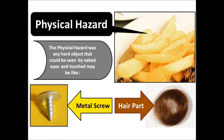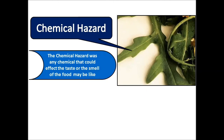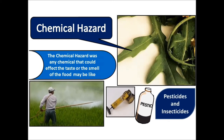The chemical hazard, as mentioned, may be in the rucola green leaf. The definition of a chemical hazard is any chemical that could affect the taste or smell of food — for example, pesticides or insecticides from the farm where the rucola was grown. Control measures include washing these leaves with clean water. We will talk more about this on Simply Foodia.